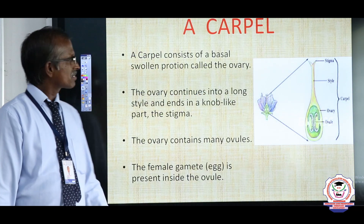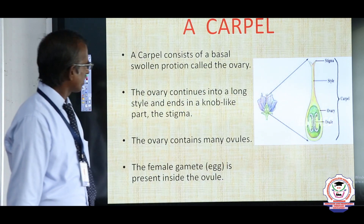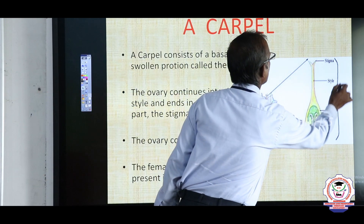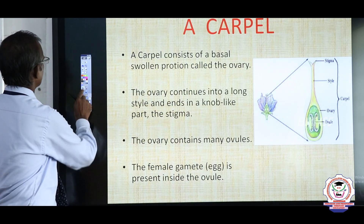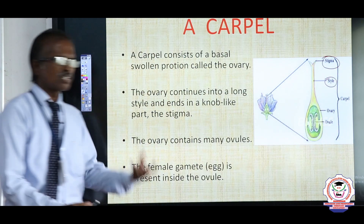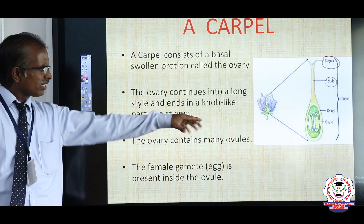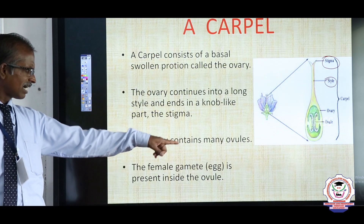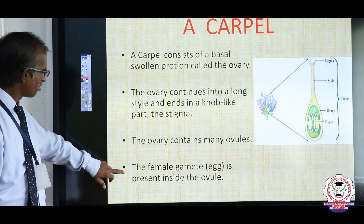The carpel or pistil has a basal swollen part called the ovary. The ovary continues to form a long tube called the style. The stigma is always sticky in nature to receive the pollen grain. Within the ovary, there are many chambers called ovules. The ovule contains a large cell that is the female gamete.